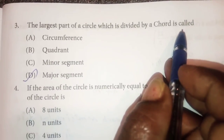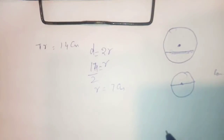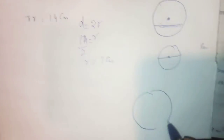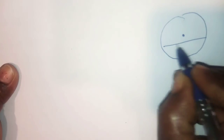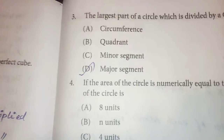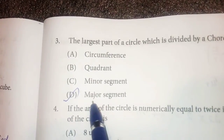Third question: The largest part of the circle which is divided by a chord is called what? When a chord divides the circle, the larger part is called the major segment and the smaller part is called the minor segment. So the largest part is called the major segment.